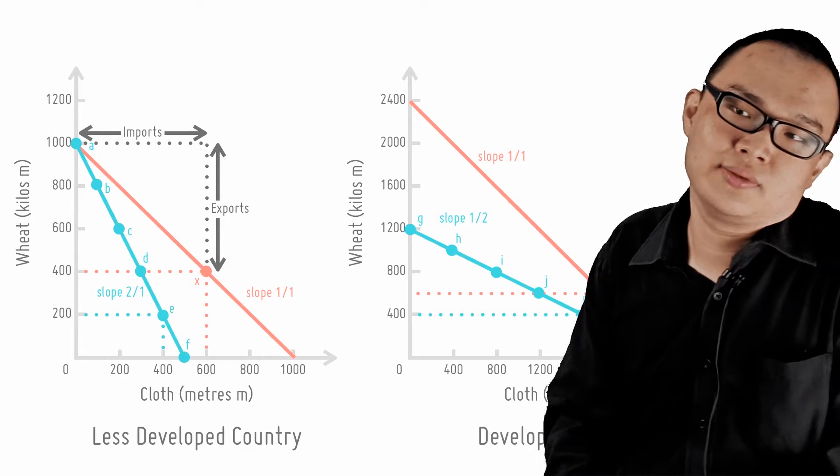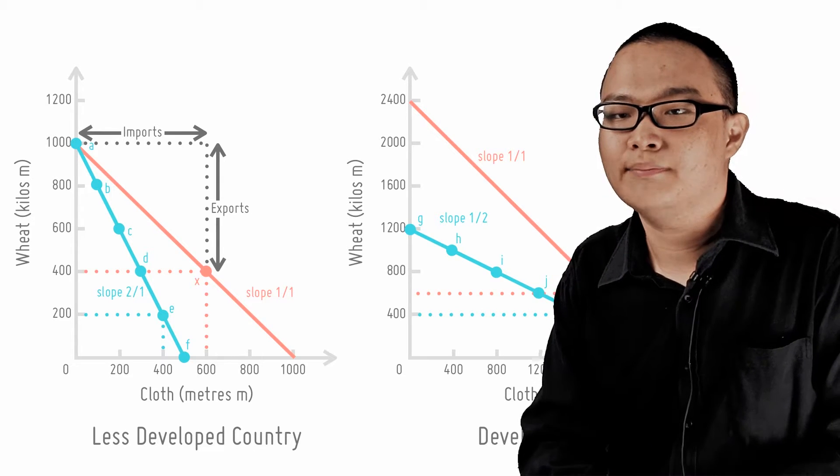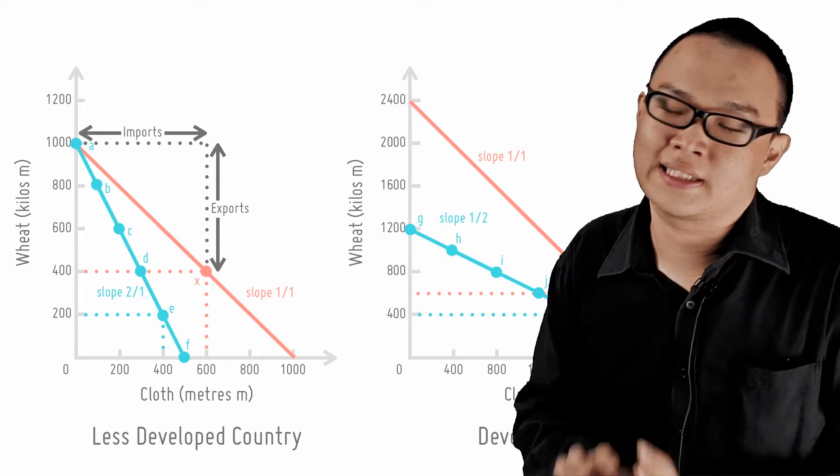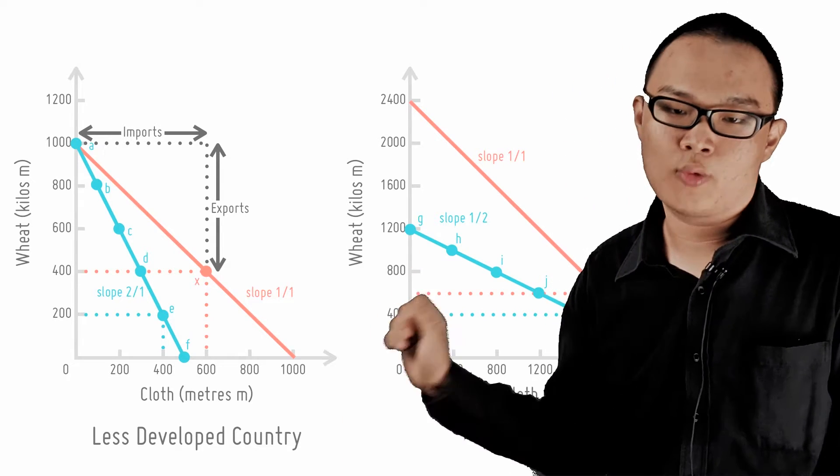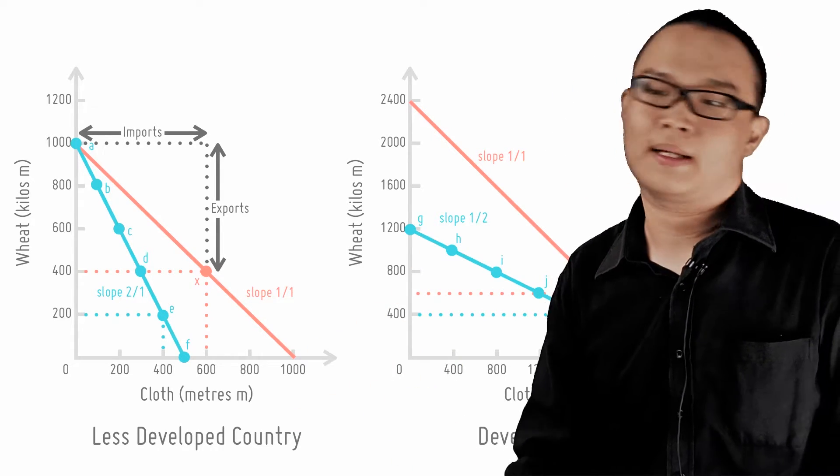Without trade and assuming no improvements in either the quantity or quality of factor inputs, and assuming constant technology, both countries can only consume along or within the blue line. They are bound by their PPC.